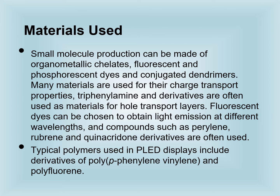Now let us see what materials are used for these manufacturing techniques. Small molecule production can be made of organometallic chelates, fluorescent and phosphorescent dyes, and conjugated dendrimers. Many materials are used for their charge transport properties. Triphenylamine and derivatives are often used as materials for the hole transport layer. Fluorescent dyes can be chosen to obtain light emission at different wavelengths, and compounds such as perylene, rubrene, and quinacridone derivatives are often used. Typical polymers used in PLED displays include derivatives of poly(phenylene vinylene) and polyfluorene.